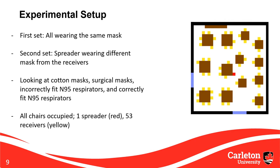In the first set of scenarios, all individuals use the same mask type, resulting in four scenarios: cotton, surgical, incorrectly fitted N95, and correctly fitted N95 respirator. The second set of scenarios has the spreader cell using a different mask type from the receiver cells. All scenarios start with tables fully occupied — one spreader cell near the middle and the remaining 53 chairs occupied with susceptible receiver cells.